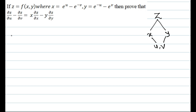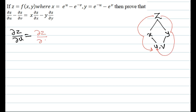We can find the value of ∂z/∂u. Since z is a function of x, x is a function of u, and z is also a function of y, y is a function of u. So we write the chain rule formula: ∂z/∂u = (∂z/∂x)(∂x/∂u) + (∂z/∂y)(∂y/∂u). Using the values of x and y, we can find these two partial derivatives.